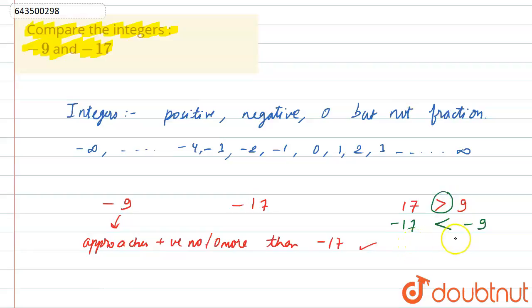So in this, -9 will be greater than -17. So we can always remember like this: whenever there are two numbers, we can just see which number is greater, and if we change the sign of both the numbers, then the inequality also changes.